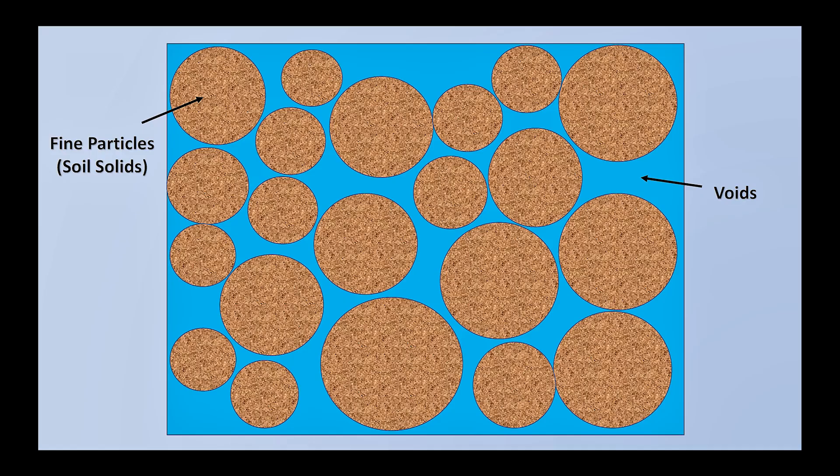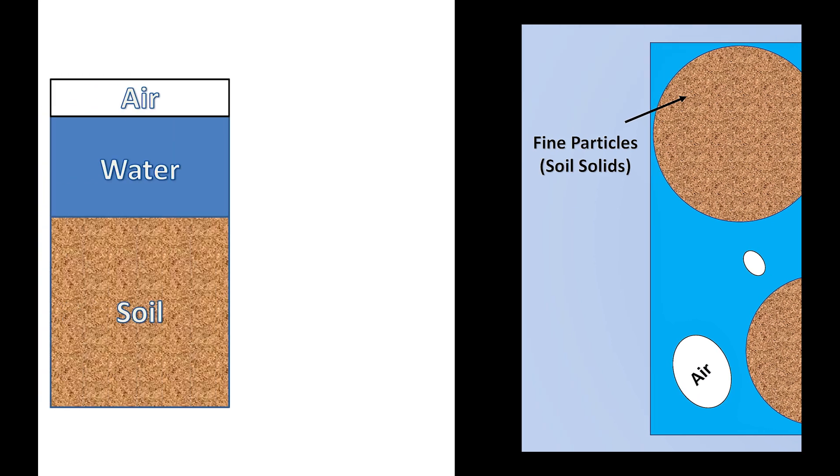Confused? Well, this can be explained with a simple diagram. Soil is composed of fine particles and voids. These voids are filled with both air and water.